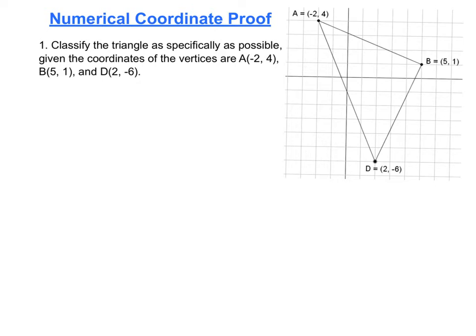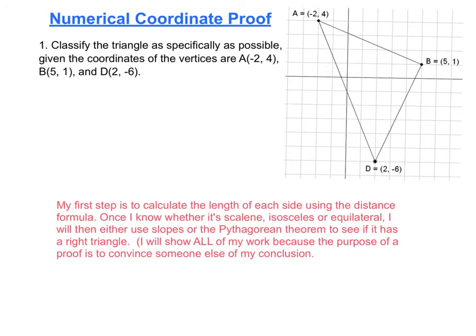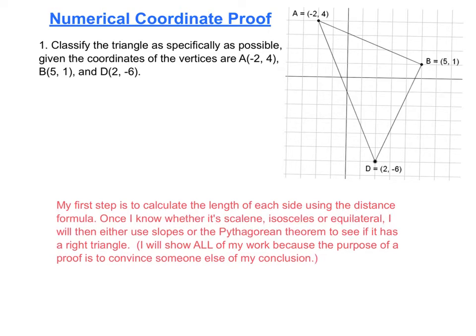Once you've completed your graph, the next step is to form a plan for how you're going to classify this triangle. This is called forming a proof plan. You can see what I'm planning to do is to calculate the length of each side using the distance formula. Basically, it's the side lengths that tell us if we have an equilateral, isosceles, or scalene triangle. Though an equilateral triangle can't contain a right angle, the other two types of triangles can also contain a right angle.